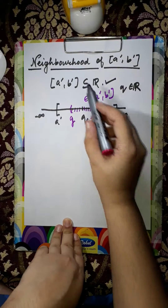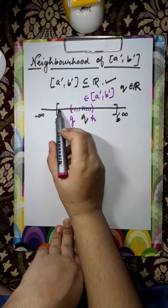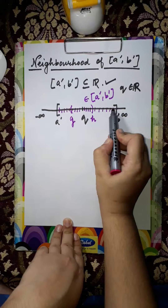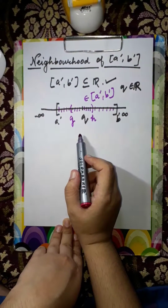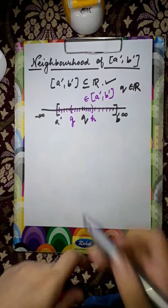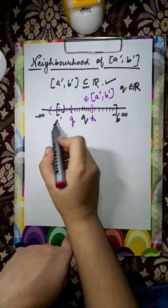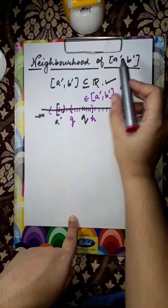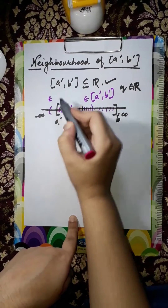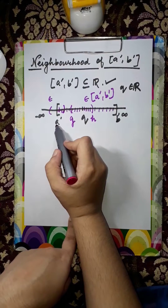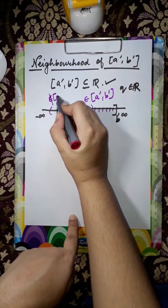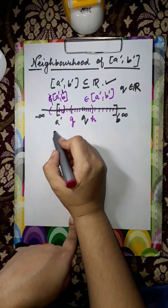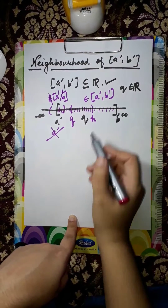By this we get that all the points lying between this closed interval will be the neighborhood of [a', b']. Now if we draw an open interval around a', we see that some points belong to this set, but none of the points lying on the left hand side of a' will belong to [a', b']. Therefore a' will not be a neighborhood of the set.